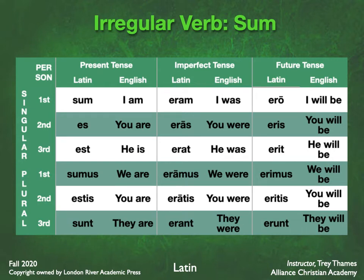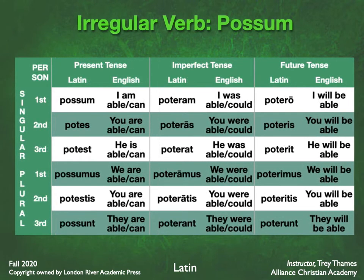Once you've mastered the verb sum — and if you need to, go back and repeat these several times — there's another irregular verb called possum, and it's very much related to this verb. It looks a lot like it, except we've added either a 'pos' or a 'pot' in front of the verbs you already learned. See if you can see sum, es, est, sumus, estis, sunt. In front of sum, you add pos, so it's possum. In front of es, you add pot, so it's potest. For est, you add pot, so you get potest.